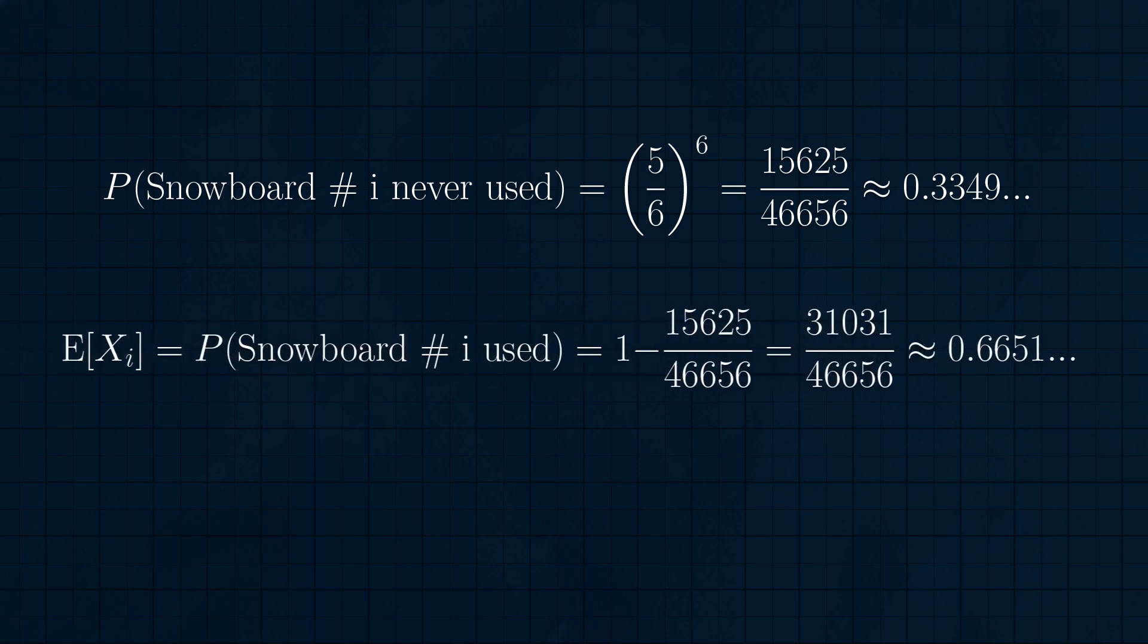Hence, the expected value of x sub i, the probability Rachel used her ith snowboard, is 1 minus 0.3349, or about 0.6651.